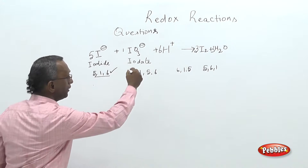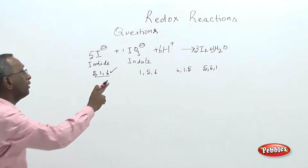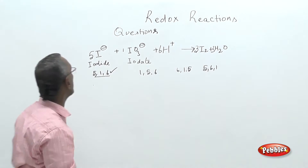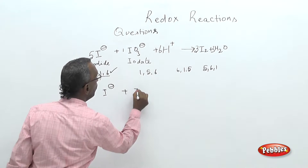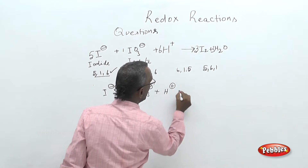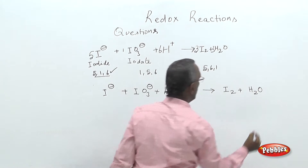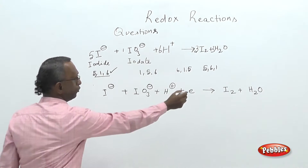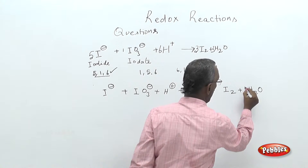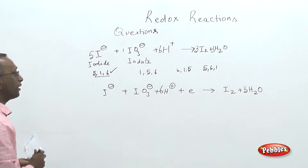The same equation can also be written in the presence of electrons, since any redox reaction involves only transfer of electrons. So: I⁻ plus IO₃⁻ plus H⁺ plus electrons giving I₂ plus H₂O. Here, 1 plus 1 gives 2 iodine atoms, getting balanced. There are 3 oxygen atoms on the reactant side, so we put 3 oxygen atoms with 6 H⁺, and then balance for the charges.